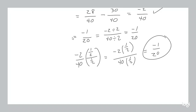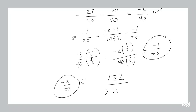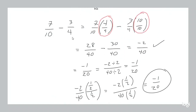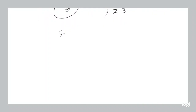Sometimes it's easy to see how to reduce something like negative 2 over 40. But what if you have say 132 over 23 — that's harder to reduce. So it's generally easier to work with smaller numbers. I'll show you how to do that with our example: 7 tenths minus 3 quarters. We multiplied by 4 fourths and 10 tenths to get a common denominator, but there's another more clever way you can do that.